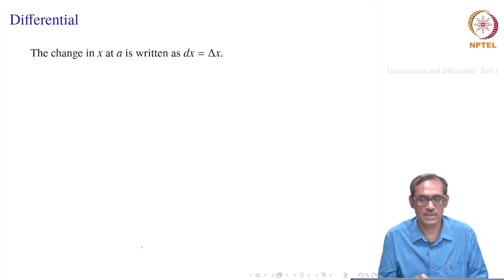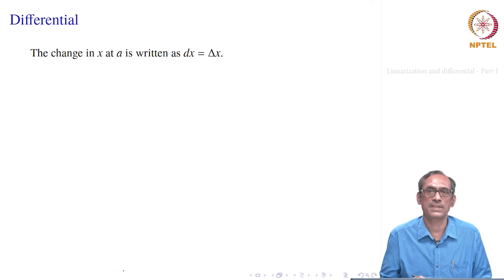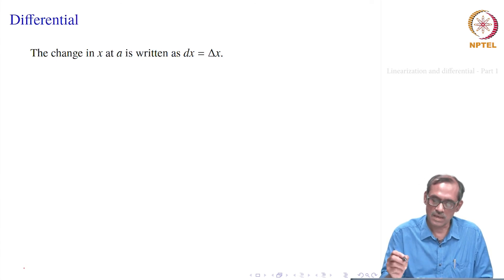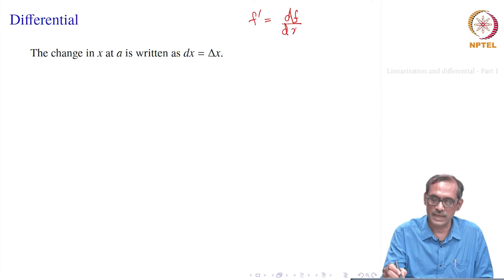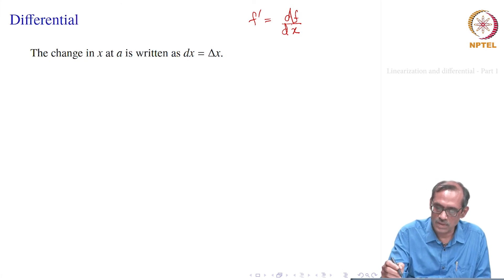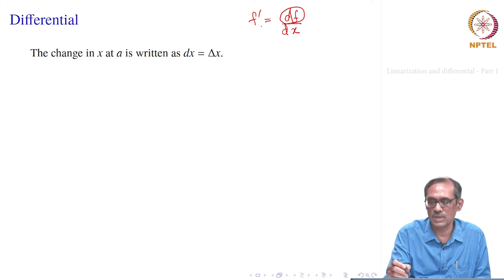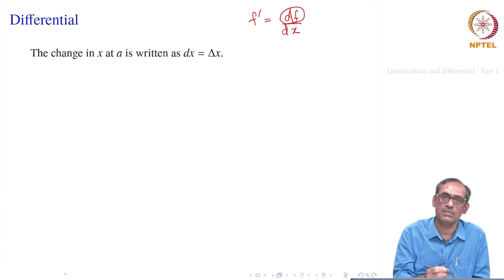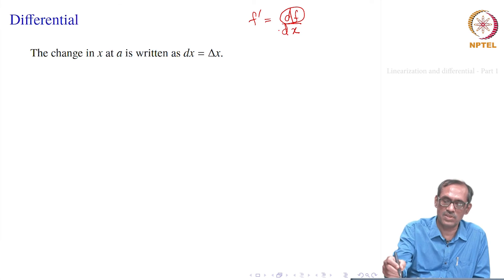Using this notion of linearization, we introduce another notion called a differential. The motivating factor is that when you write f prime, you also write the notation df by dx. We will give meaning to df so that f prime equals df by dx. We write f prime times dx equals df, so we can see this as a ratio.